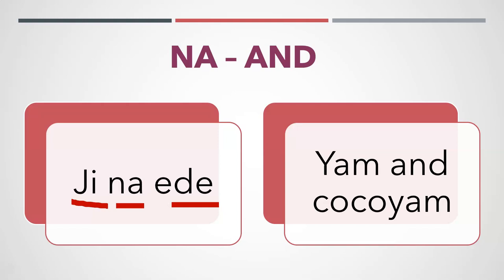We do not have any hyphen. So here it's working as a conjunction, joining two nouns together or two sentences together. Ji Na Ede — Yan and Kokoyan.